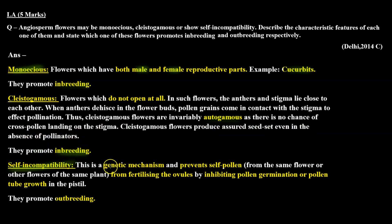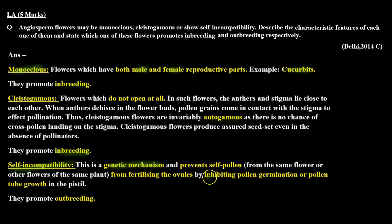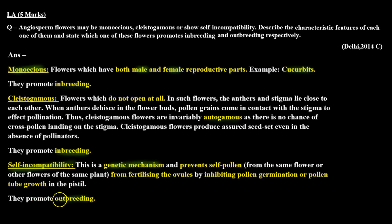Self-incompatibility is a genetic mechanism in which the stigma refuses to accept pollen grains from its own species — that is, the pollen tube cannot germinate, or if it does, its growth is retarded. This is a genetic mechanism that prevents self pollen from the same flower or other flowers of the same plant from fertilizing the ovules, by inhibiting pollen germination or pollen tube growth in the pistil. Self-incompatibility promotes out-breeding.